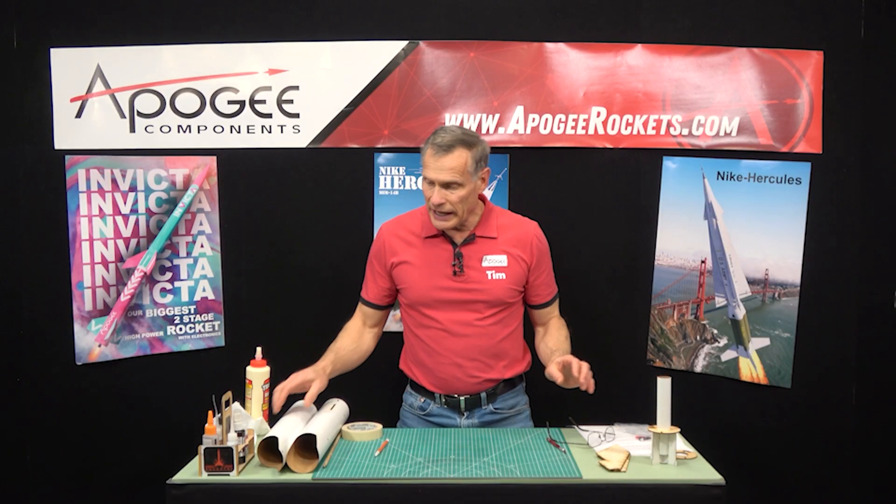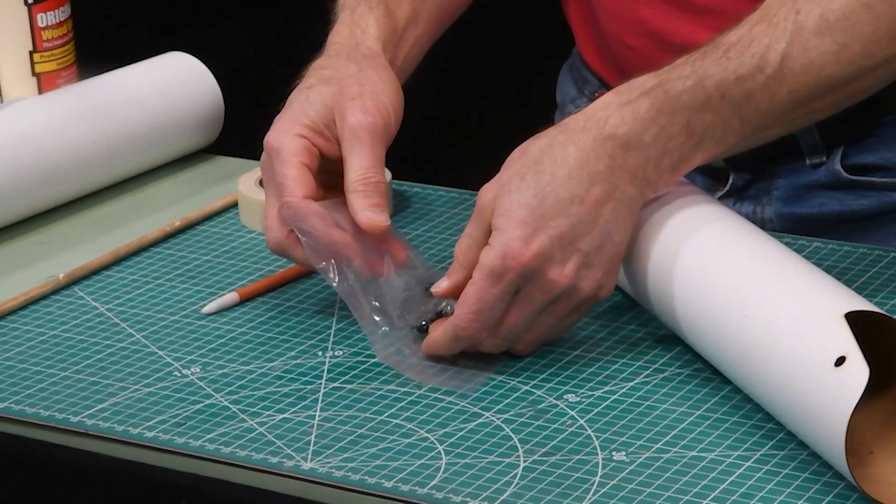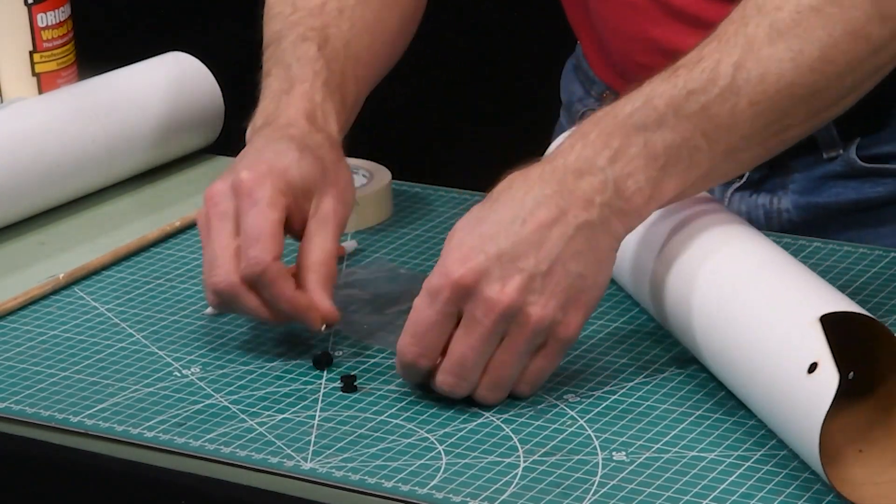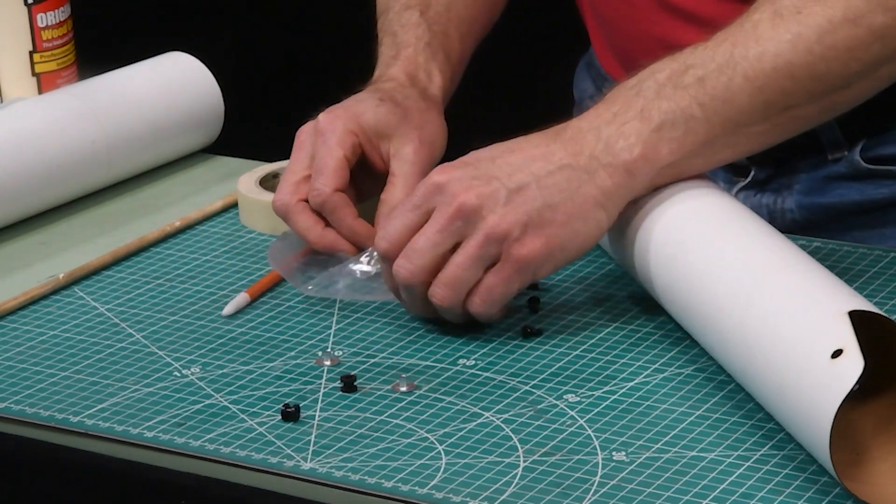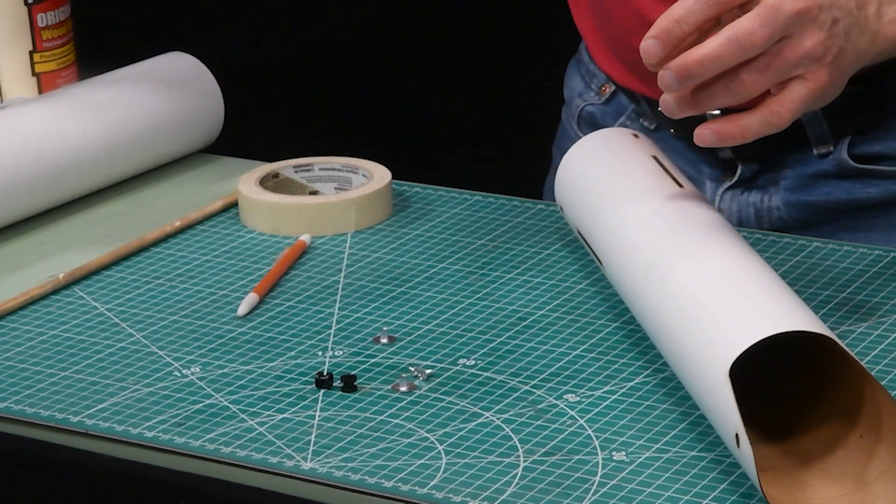In step 28, we've got the one with the fin slots. There's going to be two rail buttons installed there, so you're going to want to get the last two rail buttons, the two weld nuts, and the two little screws. As before, we'll glue these in place.